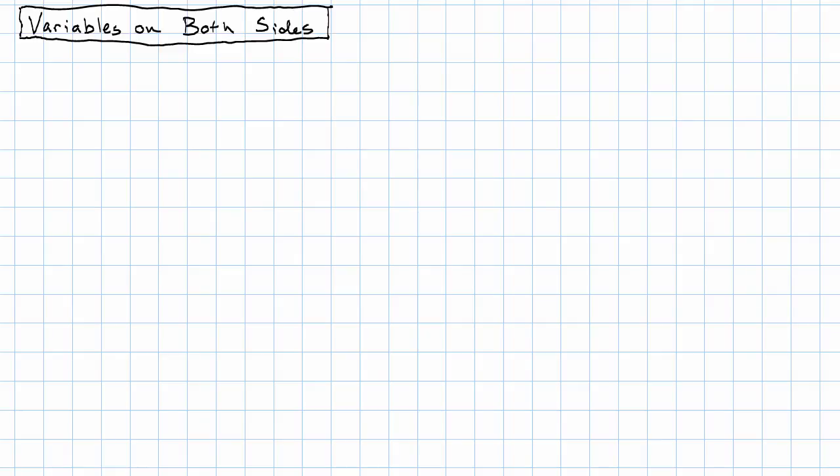What happens when we have an equation in which variable terms appear on both sides? Well, remember, for the moment we're only dealing with linear equations in one variable. So an equation that has variable terms on both sides will look something like this: 5x plus 7 equals 3x plus 23. Notice, if the expressions on both sides need to be simplified, we may need to simplify them to get to this point.